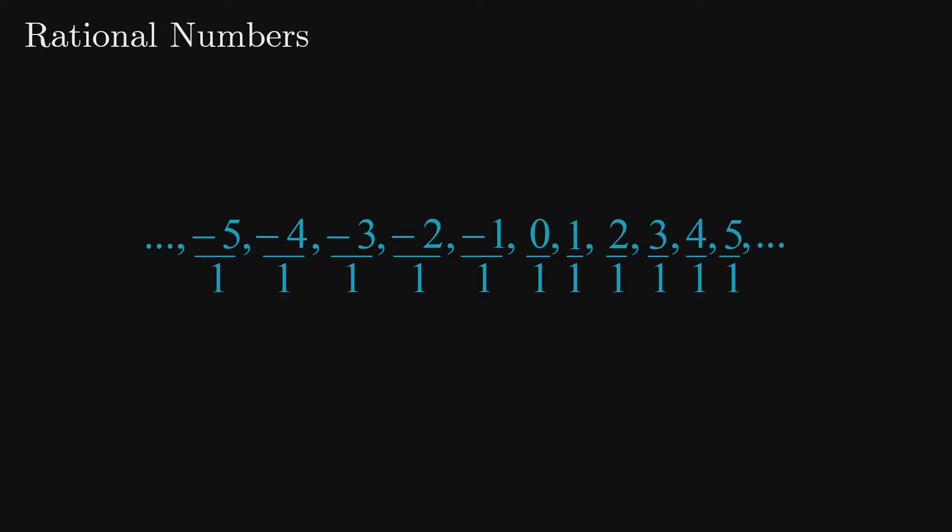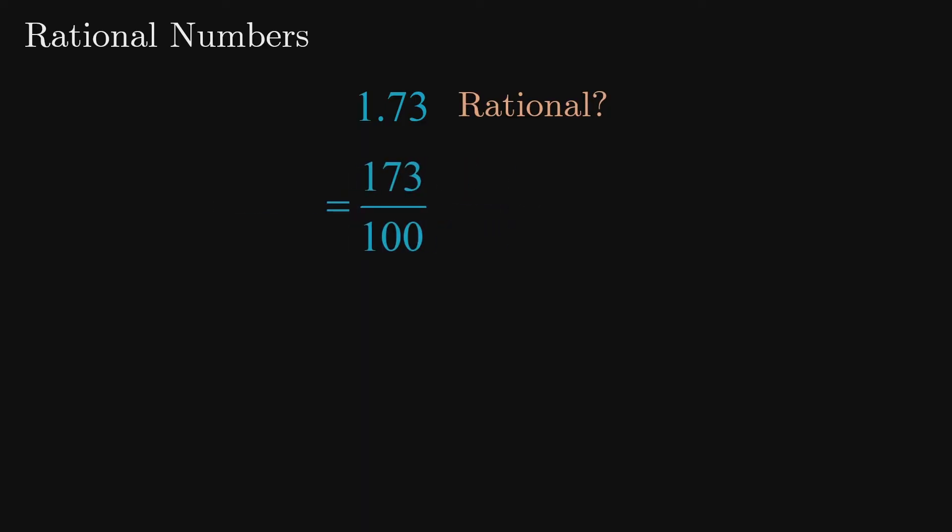Sometimes it's not as obvious that a number is rational. For example, consider the number 1.73. Can we write this number as a fraction using only integers? We most certainly can. It's 173 over 100.